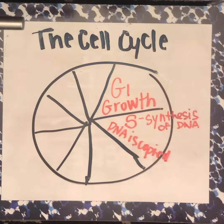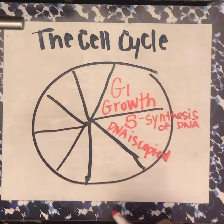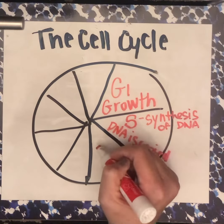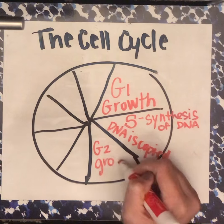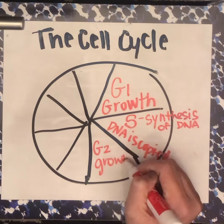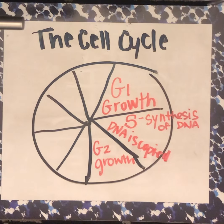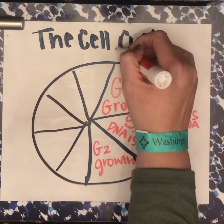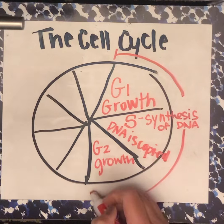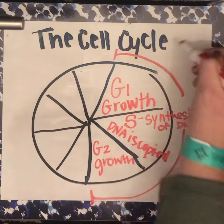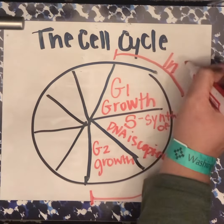Because remember, we're getting ready to split the cell, so it's got to have twice the amount of DNA — and so this is where that happens. The next phase is G2, which is more growth, and it's getting ready to divide. These three phases — G1, S, and G2 — make up interphase.